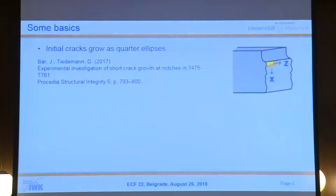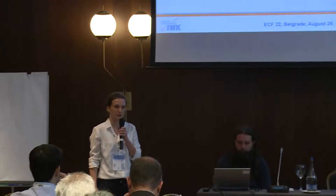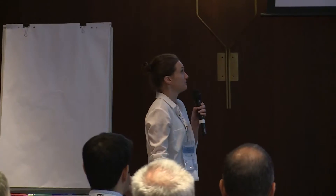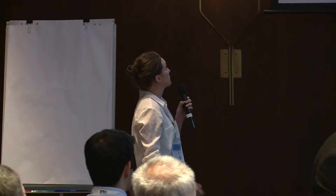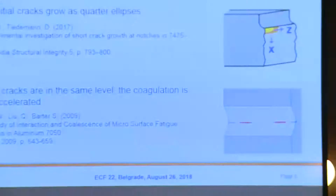As background: previous investigations show that fatigue cracks start at edges and propagate as flat ellipses. The first reference is from Brian Tiedemann, who did experiments without any overloads. On the other hand, others found that if there are two initial cracks at the same level, they attract each other, coalescence is accelerated, and the cyclic lifetime is reduced.